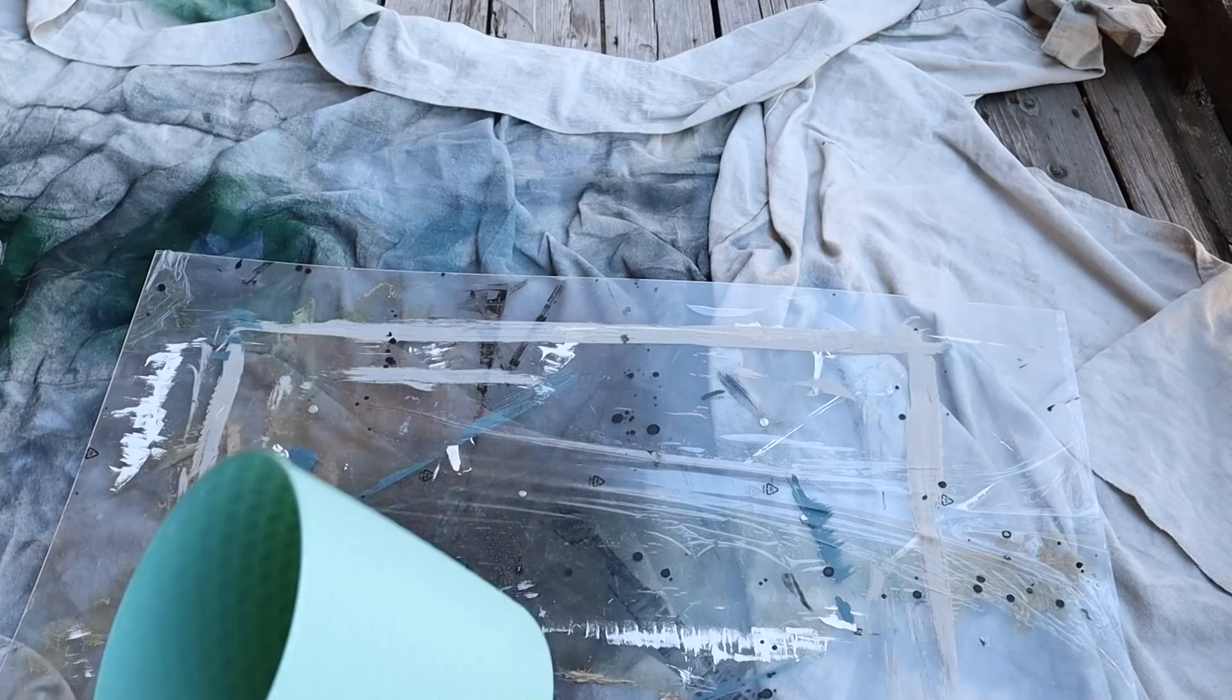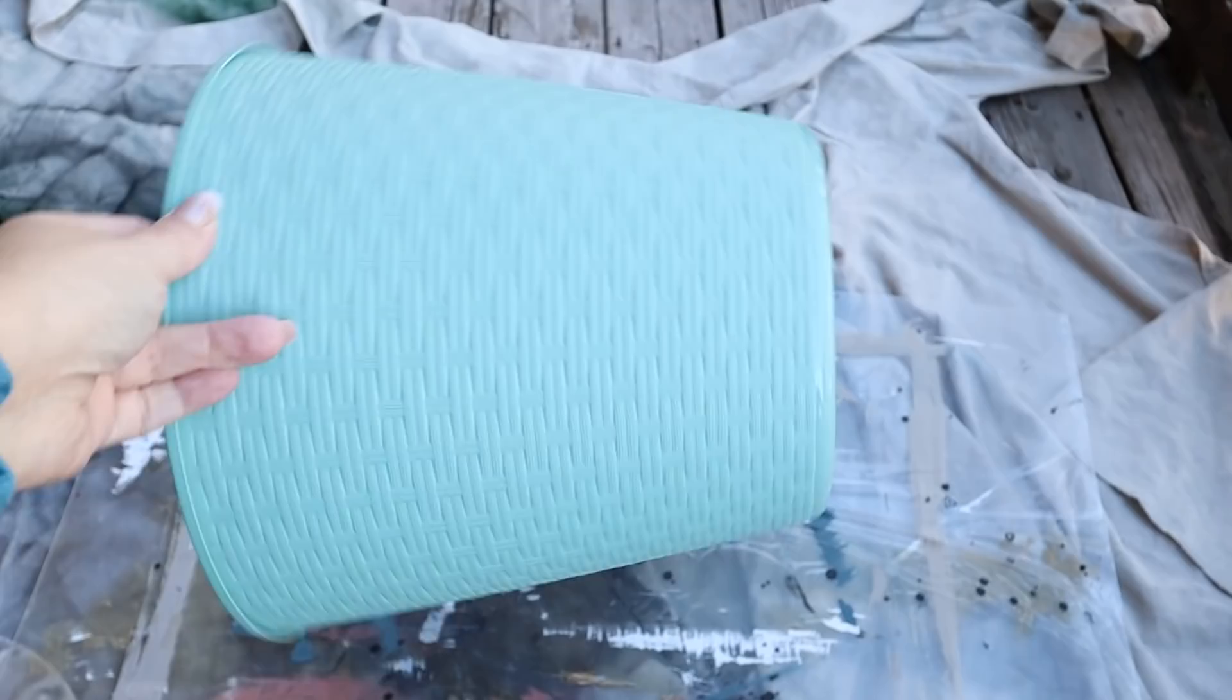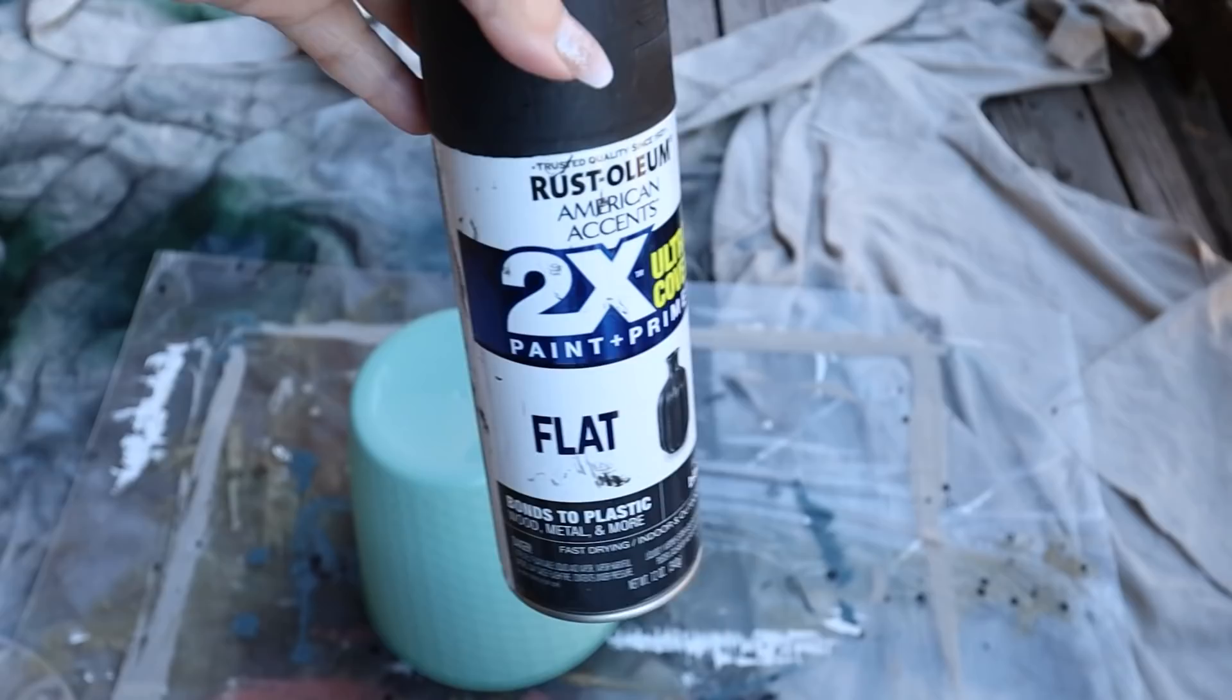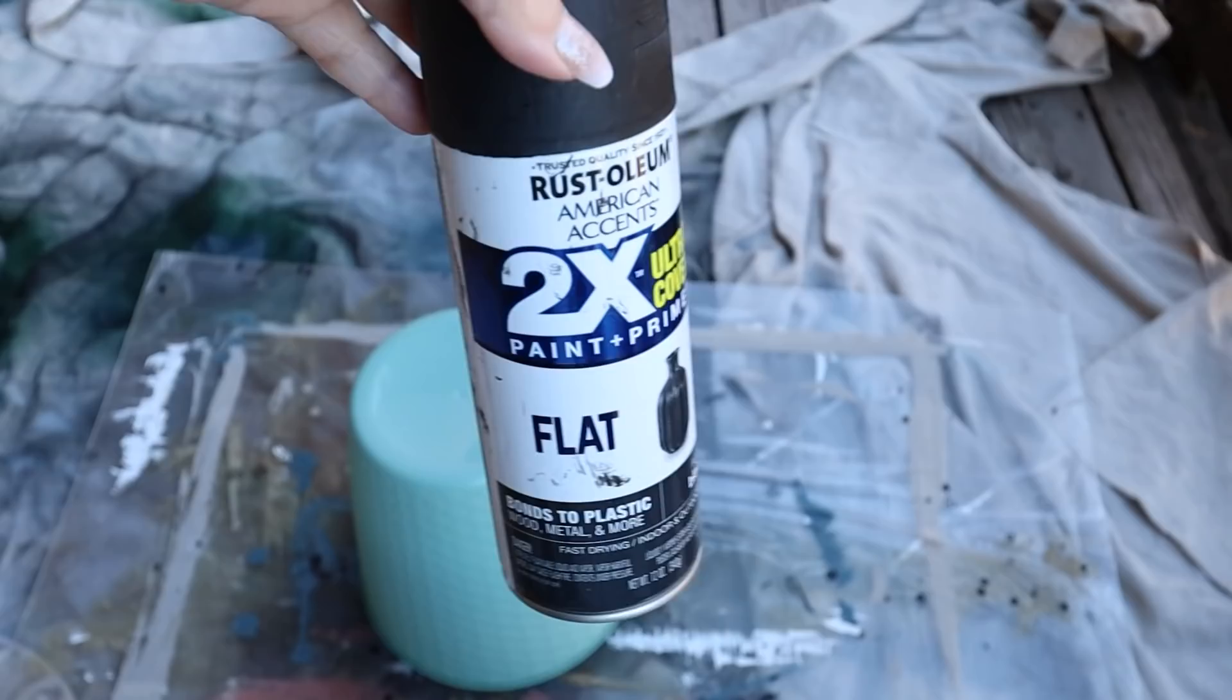This time of year, Dollar Tree has out all of their new organization. I came across this container. I think it was meant to be a trash can, but I really liked the rattan around it, and it felt like a planter to me. So I started by spraying it with two coats of a black spray paint.